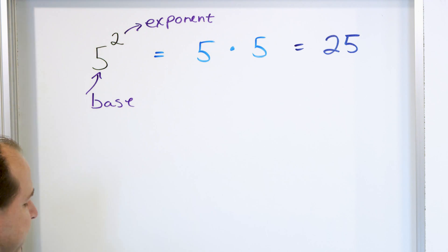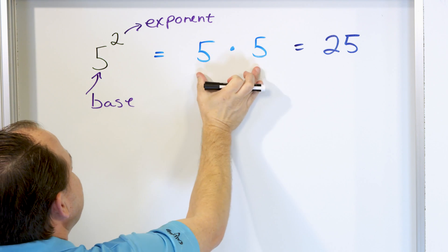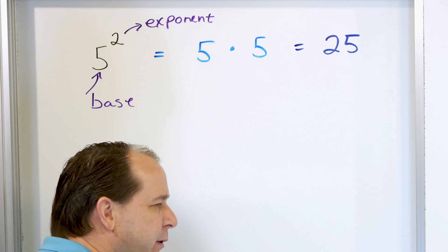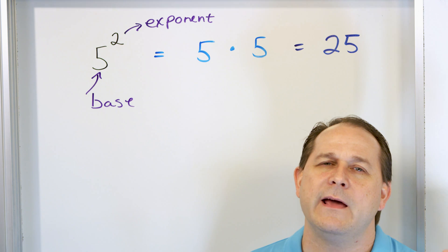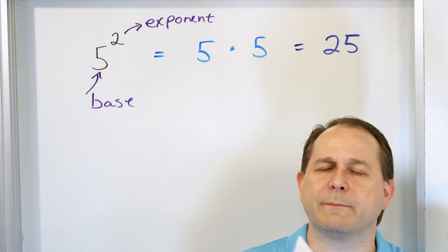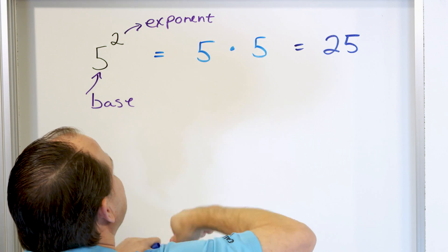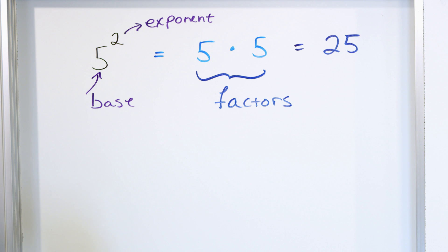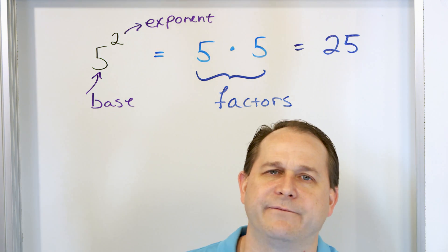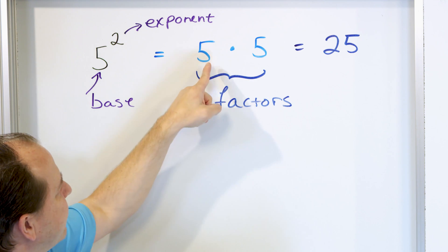We can have different exponents, which we'll talk about in just a minute. When we write a base raised to an exponent, what we're doing is multiplying it by itself. If you remember from previous math lessons, we talked about the idea of a factor — factors of numbers, greatest common factor. In math, a factor is just the numbers that can be multiplied together to give you a particular number. So because five squared can be written as five times five, we say those are the factors. If you ever see 'write it as a product of factors,' they just want you to write it out as things multiplied together.